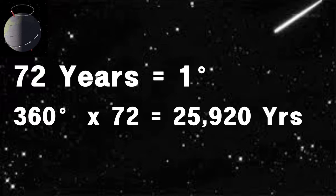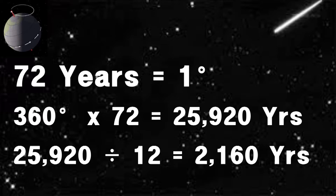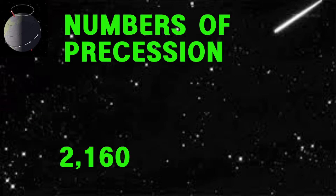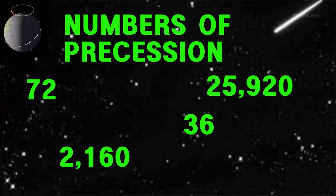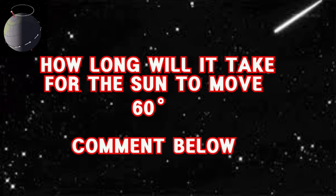That's 72 times 360. If we divide the full cycle by the 12 constellations, we have 2,160 — the number of years each constellation will house the equinox. There are lots of numbers associated with precession: half a degree of movement takes 36 years, three quarters of a degree takes 54 years, and two degrees takes 144 years. Try it for yourself — work out how long it will take for the sun to move 60 degrees and comment below. Just multiply the number of degrees by 72 and you can come up with a range of numbers associated with precession.